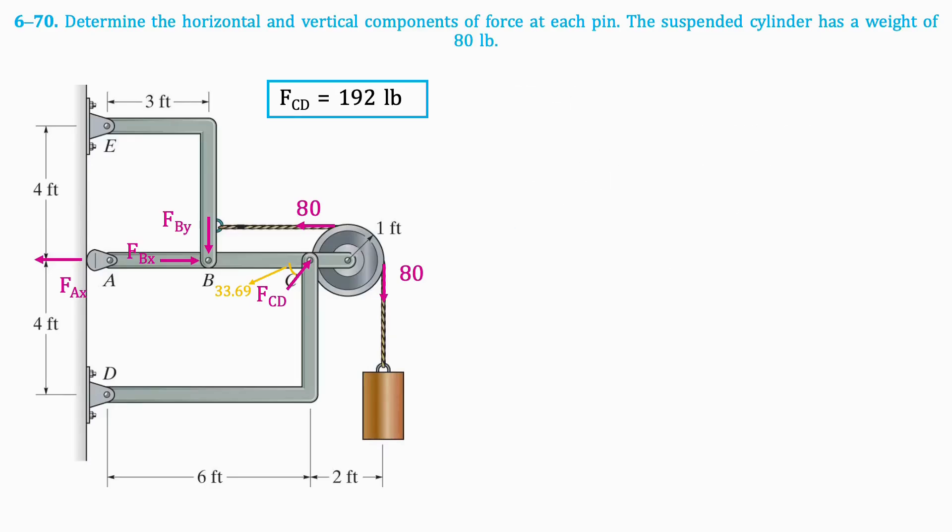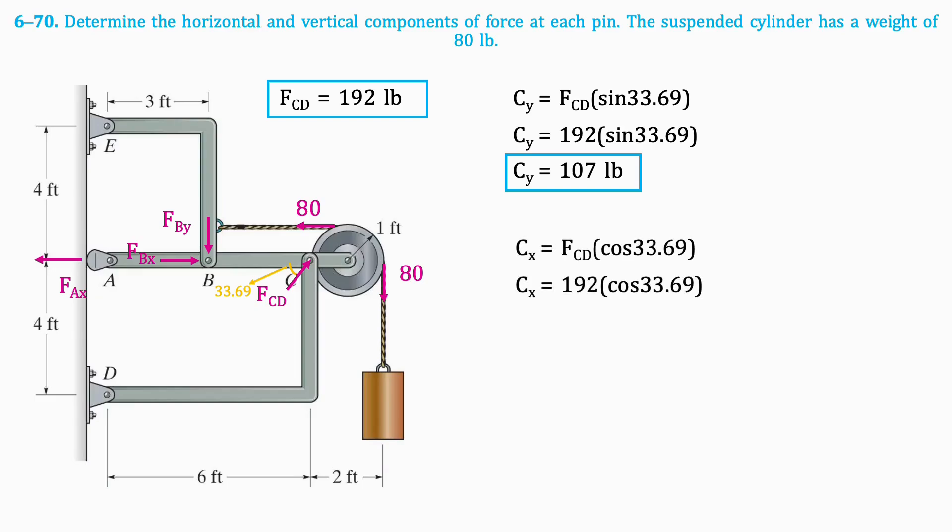Because we know F_CD, we can find the reactions at pin C. The Y component is the sine of F_CD, which equals 160 pounds. Because member CD is a two-force member, this means that the reaction forces at D are the same as the reactions at C.